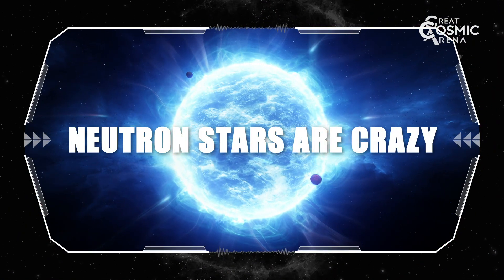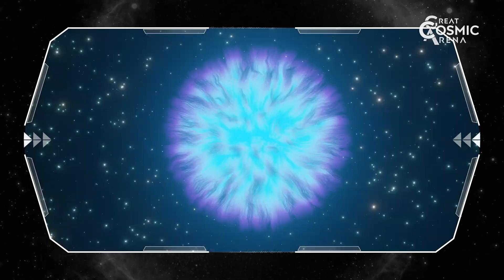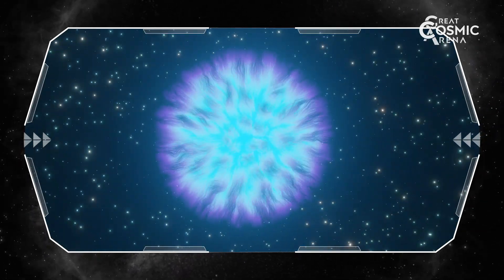Neutron stars are crazy. A teaspoon of their material would weigh more than Mount Everest. They're formed from collapsed stars, packing incredible mass into a tiny space.